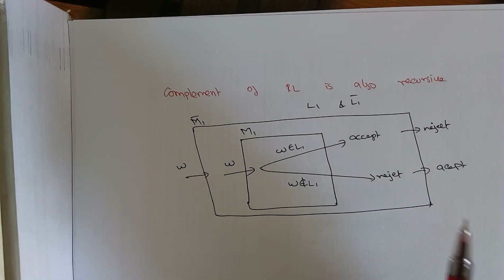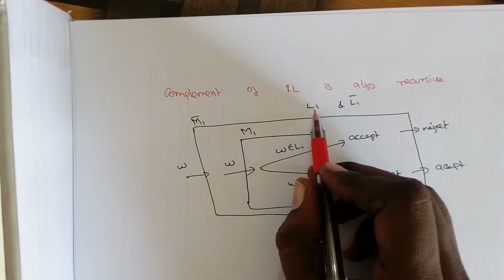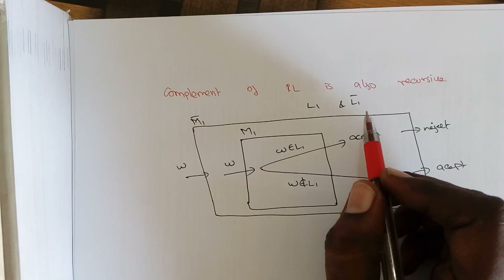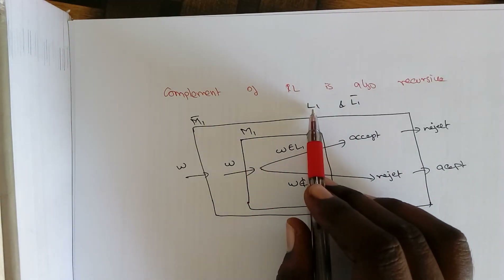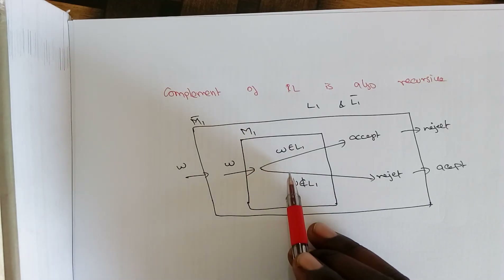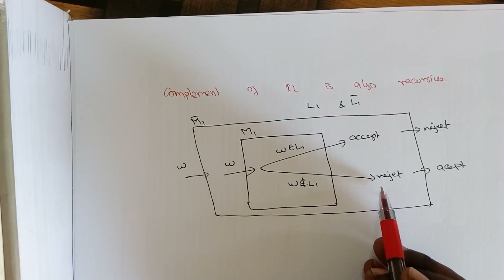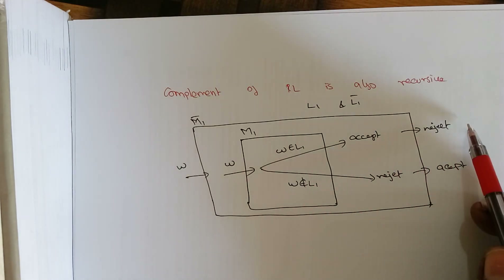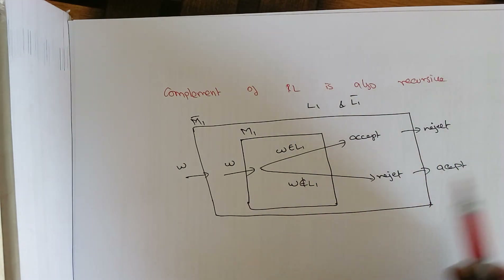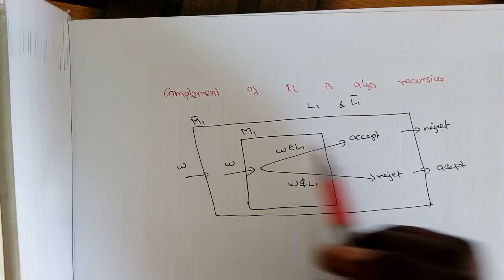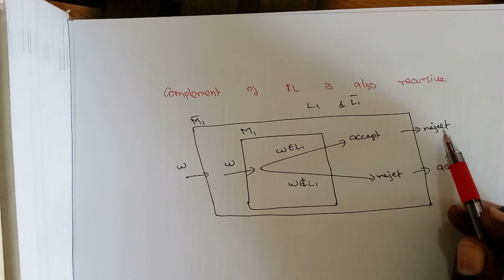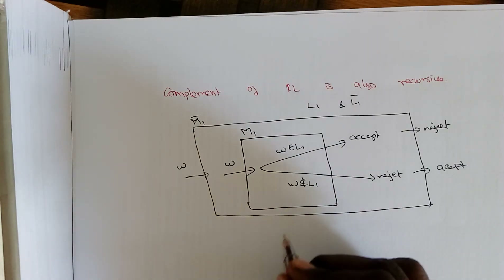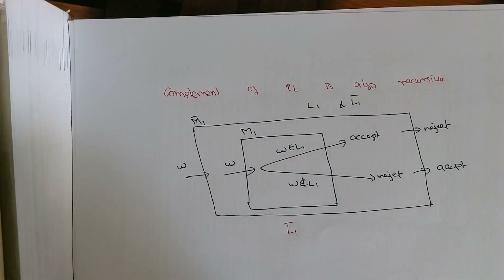The next property is that the complement of a recursive language is also recursive. For example, if L1 is the language where input starts with A, then L1 complement (L1 bar) contains all inputs that don't start with A. Since L1 is recursive, we construct machine M1 that accepts inputs in L1 and rejects otherwise. The complement simply reverses this: if the input is accepted by M1, it is rejected in the complement machine M', and if rejected by M1, it is accepted. Acceptance and rejections are properly defined, so the complement of a recursive language is also recursive.